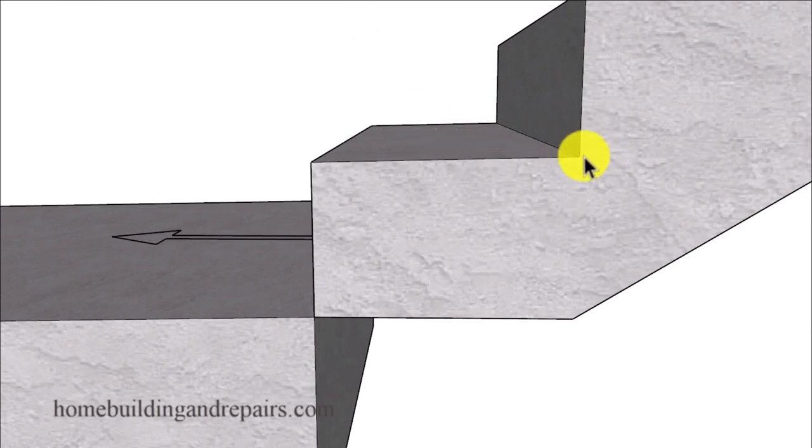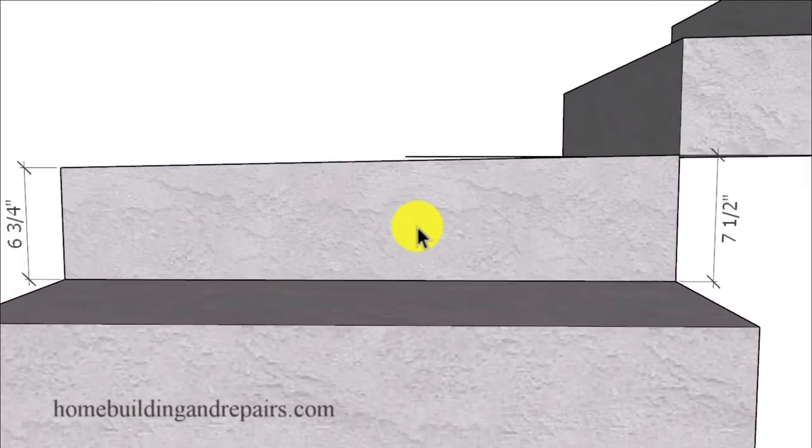So each step is going to be sloping about a quarter of an inch per foot as a general rule of thumb so that the water won't remain on the steps. It's going to drain off of the steps to avoid puddling and creating safety problems.